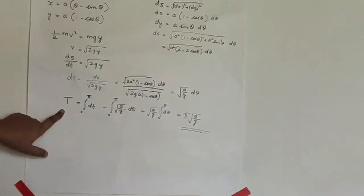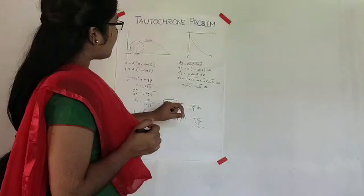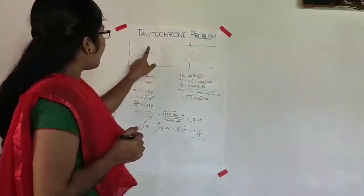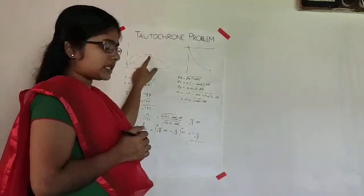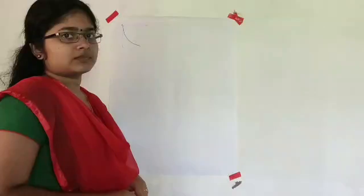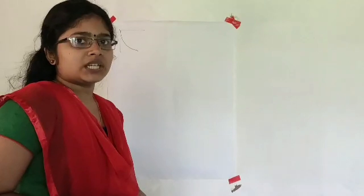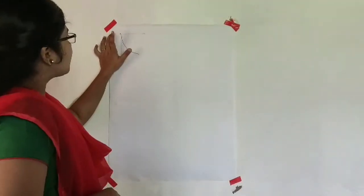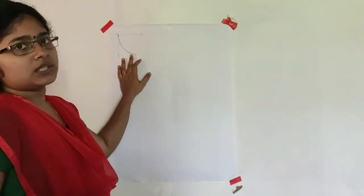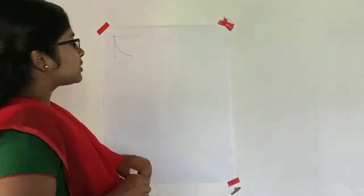So the total time is π times root of a/g. We have proved that the time taken for a bead placed at the origin to reach the lowest point of the cycloid curve is π√(a/g). Now we consider an arbitrary point on this curve.